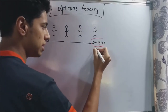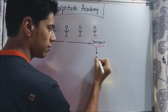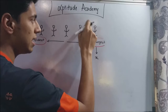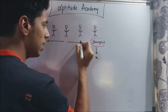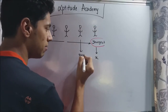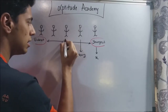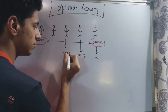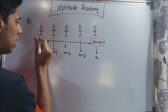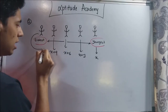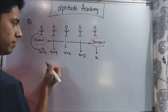Let us assume the youngest child's age is x. The next sibling was born three years before, so that child will be three years older: x plus three. The next will be x plus six, then x plus nine, and the eldest will be x plus twelve.